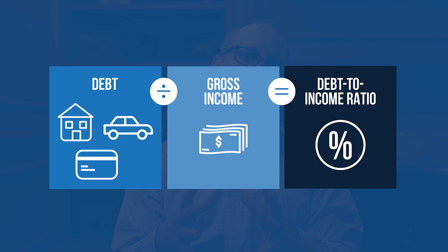allow for up to a 50% debt-to-income ratio. Conventional mortgages backed by Fannie Mae and Freddie Mac will allow for up to 45%, and sometimes up to 50% as long as the loan-to-value is lower and the credit scores are higher.